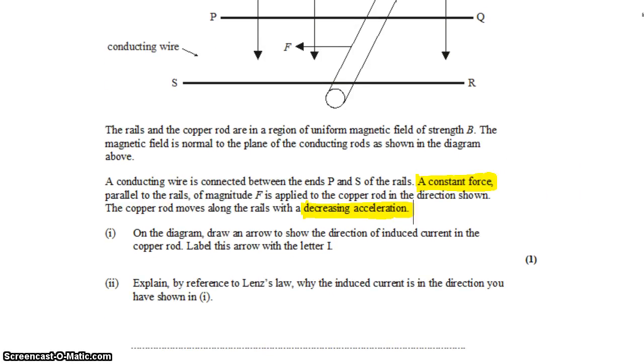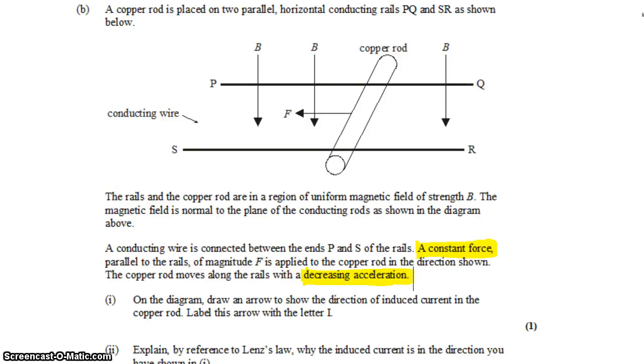On the diagram, draw an arrow to show the direction of induced current in the copper rod. Label this arrow with the letter I. So there's a couple of ways that you can attempt this question. I'm going to show you how to do this using the right-hand rule, which is going to be tough to do in a video, so you might want to follow along with your own hand.